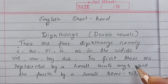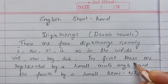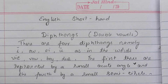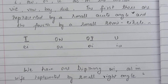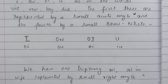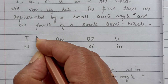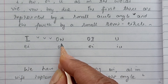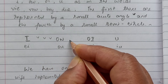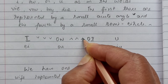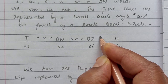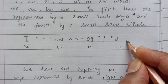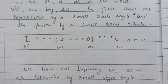The first three diphthongs are represented by a small acute angle, and the fourth by a small semicircle. So I is represented as a small acute angle. O is represented as the reverse of I. I can be written like this, and U can be represented as a small semicircle.